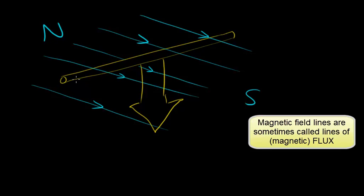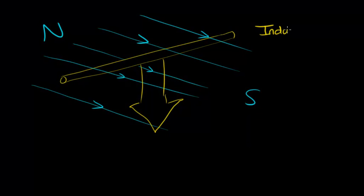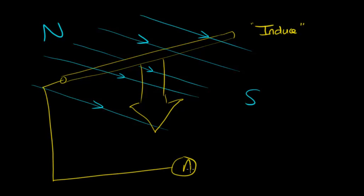And as those lines of flux get cut, we will induce—and that's a key word to remember—induce a potential difference, a voltage across the ends. So if you link this up to a circuit and you had a sensitive ammeter, then as it drops through the magnetic field and cuts through the lines of magnetic field, you will see the ammeter register a reading, meaning you've generated electricity. And this is the principle of how the electricity we use every day is generated.